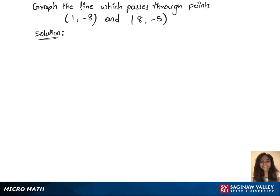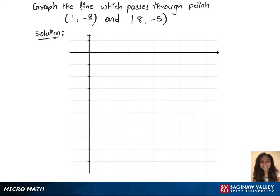To graph the line which passes through these points, we need a graph. The points lie in the fourth quadrant, so we use the fourth quadrant. We have the scale set up, and now let's plot the first point.